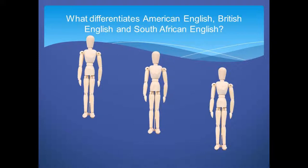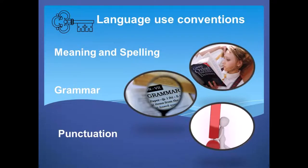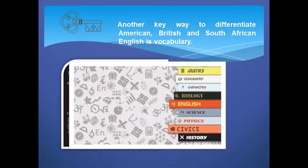What differentiates American English, British English and South African English? One of the key ways is language use convention — that is meaning and spelling, grammar and punctuation. Another key way to differentiate American, British and South African English is vocabulary. Vocabulary as well as grammar and punctuation will be featured in forthcoming videos.